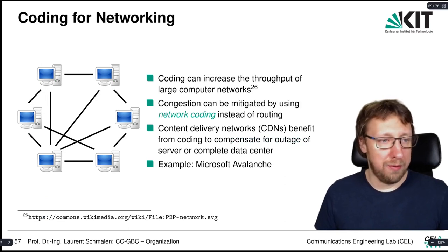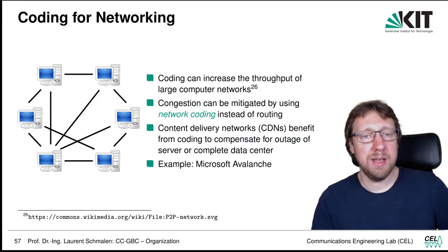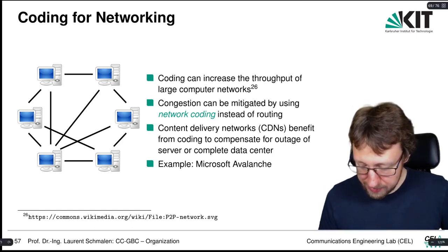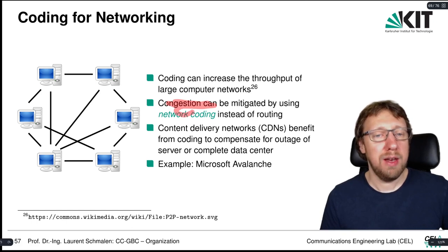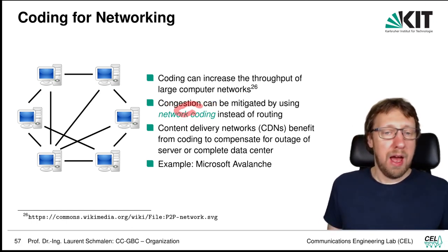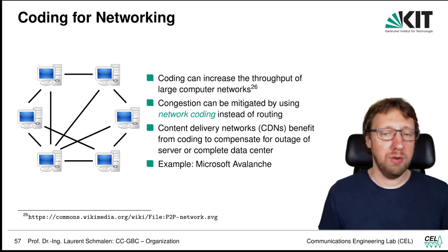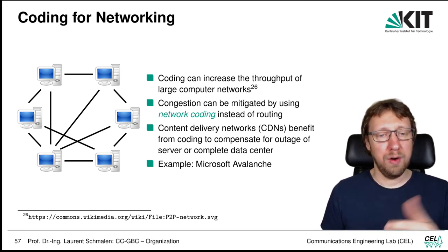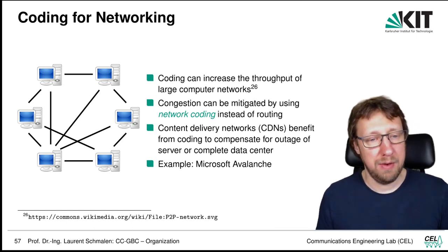Coding can also be used for networks. In computer networks, coding can increase throughput and mitigate congestion using network coding instead of routing — being used in content delivery networks like Microsoft Avalanche. You can compensate for server outage or an overloaded router, and network coding will increase throughput in data networks.